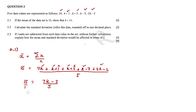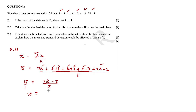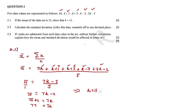Cross-multiplying: 15 times 5 equals 75, so 75 equals 7k minus 2. Transposing: 75 plus 2 equals 7k, which gives 77 equals 7k. Dividing both sides by 7, k is equal to 11.